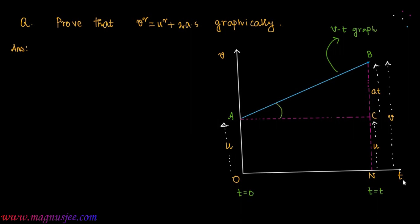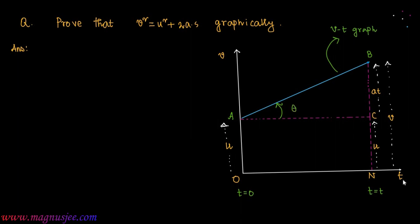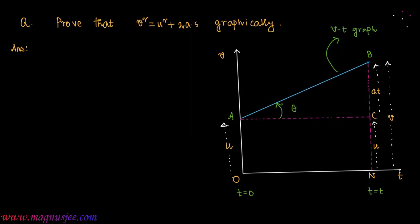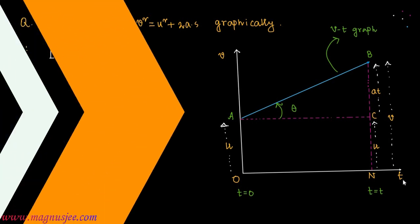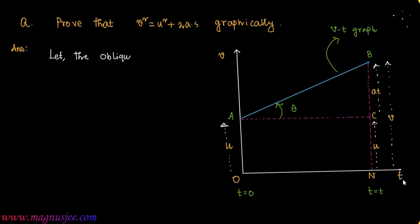AB, the velocity-time graph, makes an angle θ with the positive time axis. θ is the angle subtended by the straight line AB with AC.